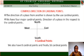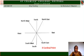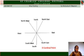We also have eight cardinal points and finally sixteen cardinal points. For the eight cardinal points: North, South, East, and West. Between North and East you have North East. Between South and East you have South East. Between North and West you have North West. Between South and West you have South West.